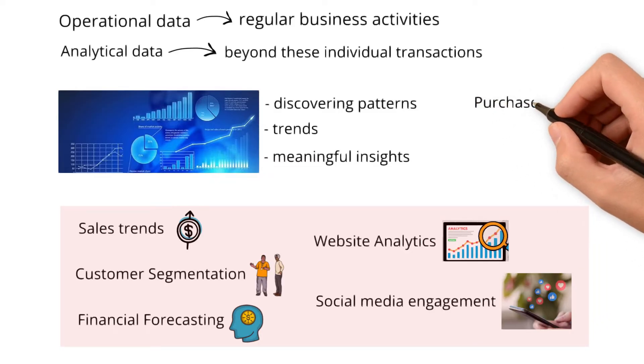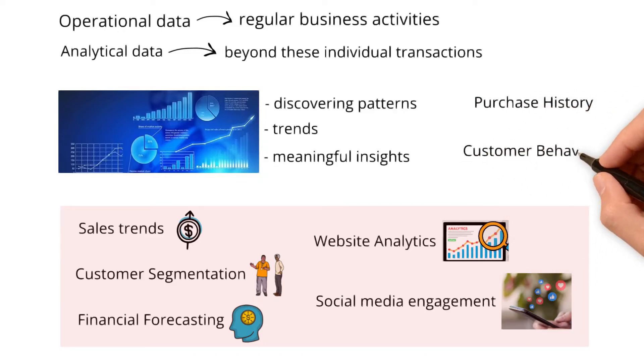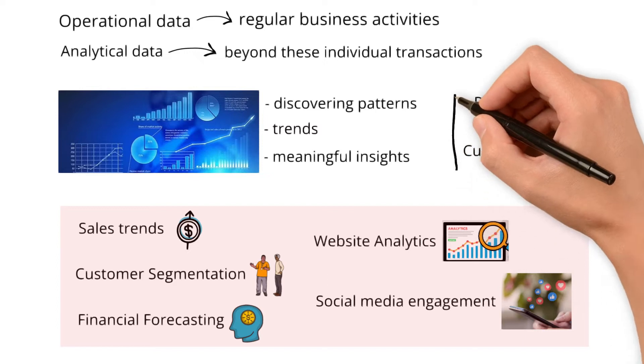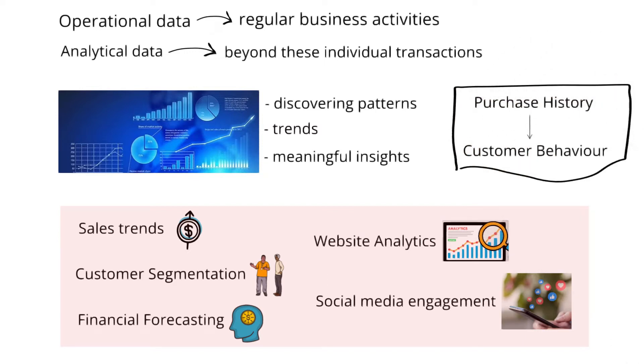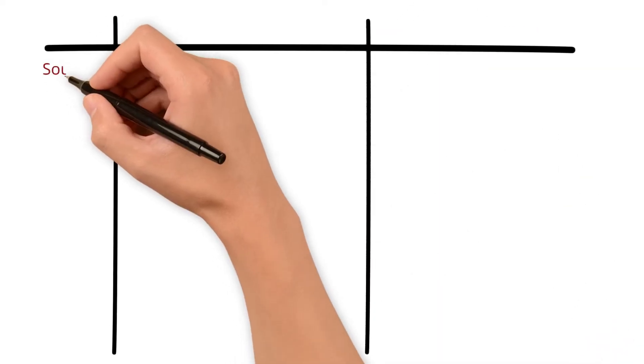Imagine the company looking at the purchase history. By doing this, they learn about what customers like and how they choose products. This kind of information is what we call analytical data. With this clarification on what is operational and analytical data, let's understand where these data are sourced from.